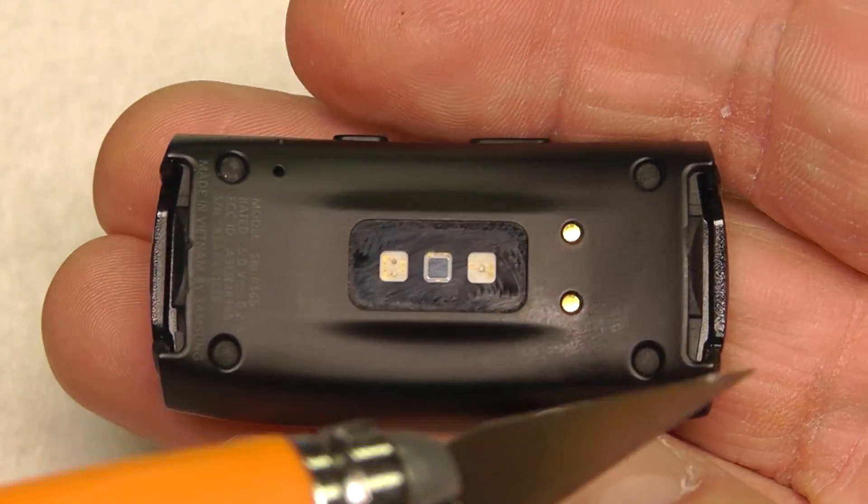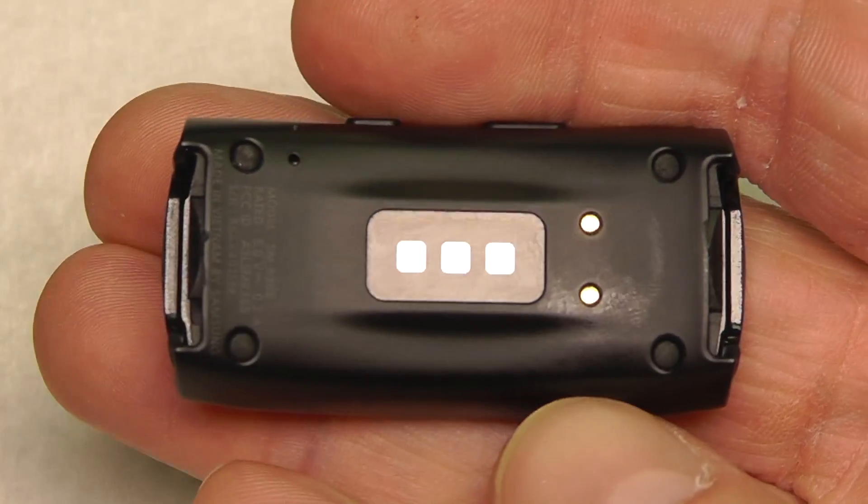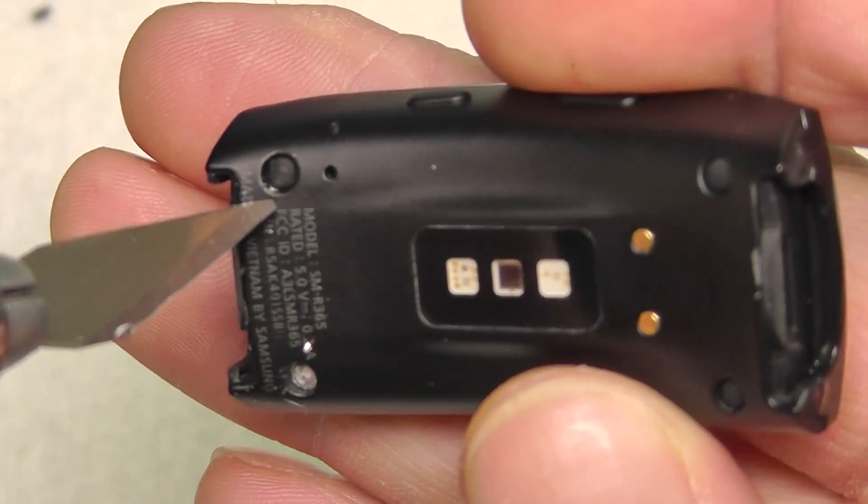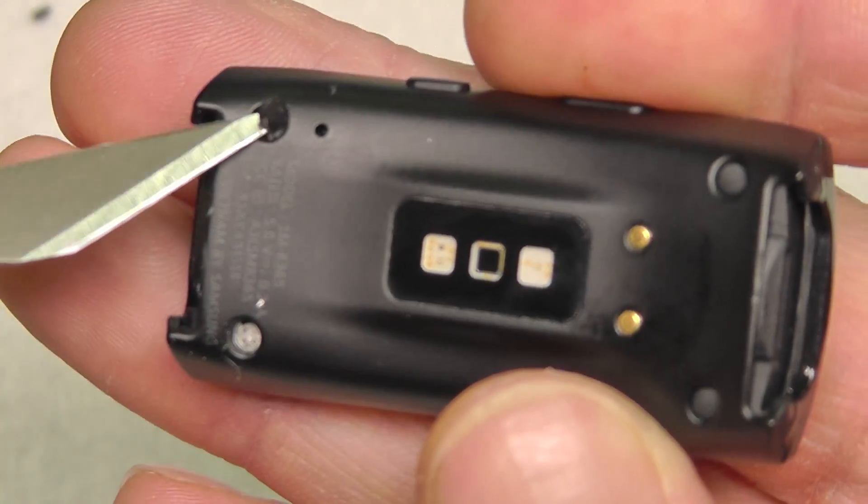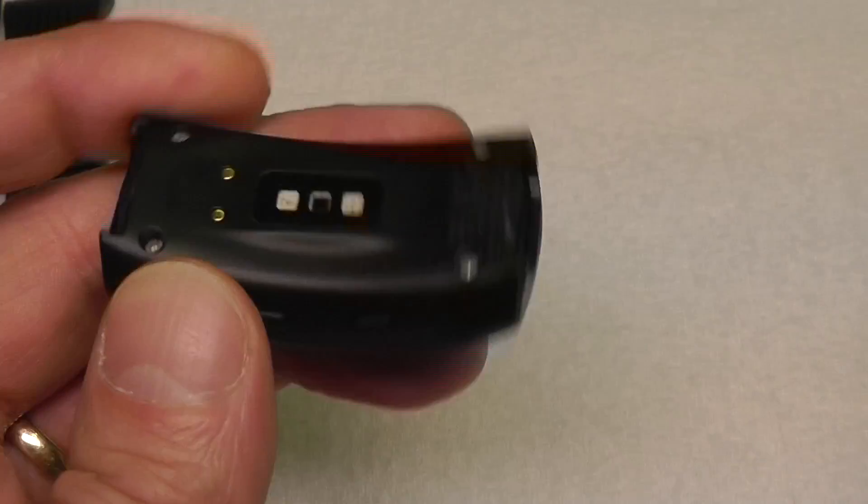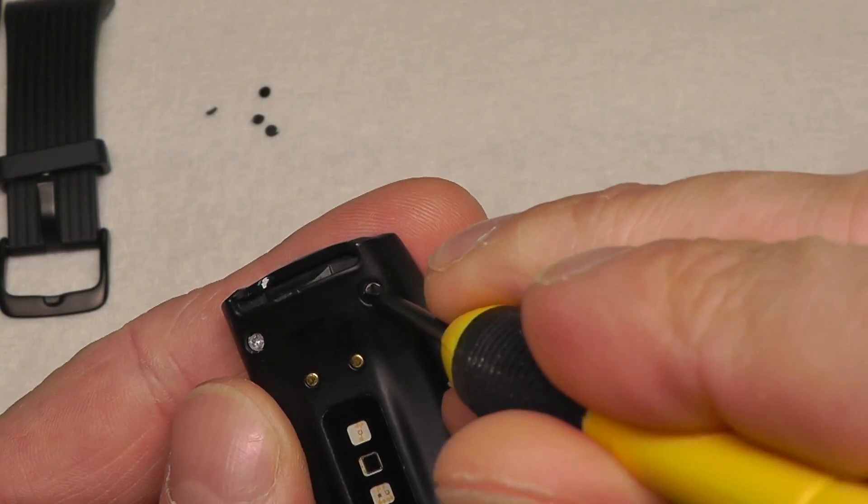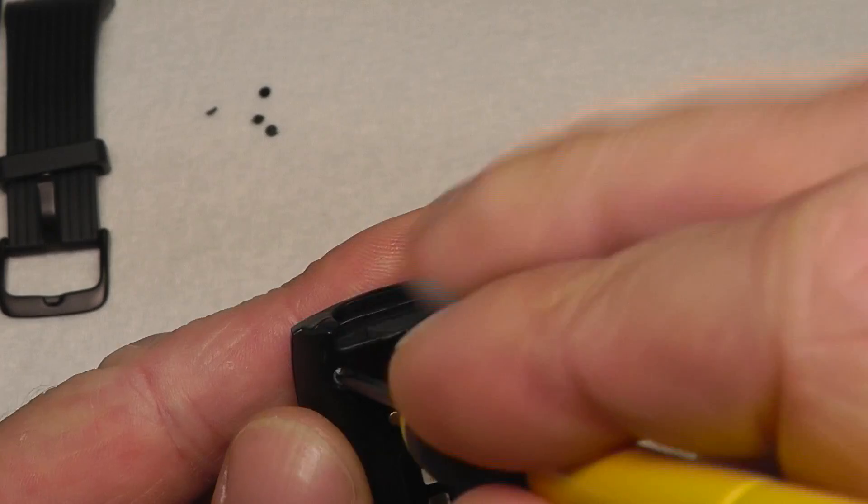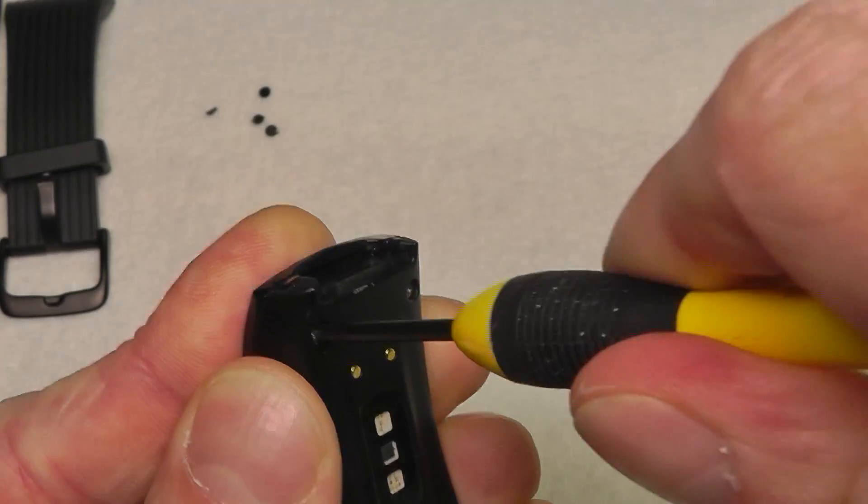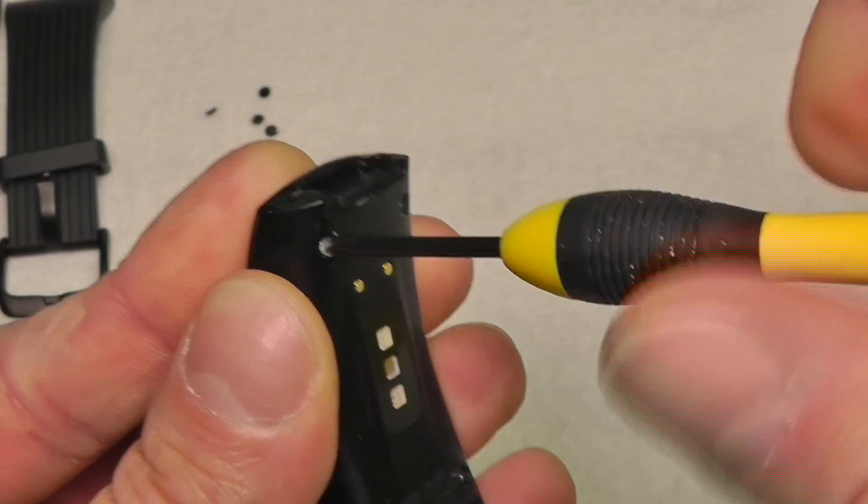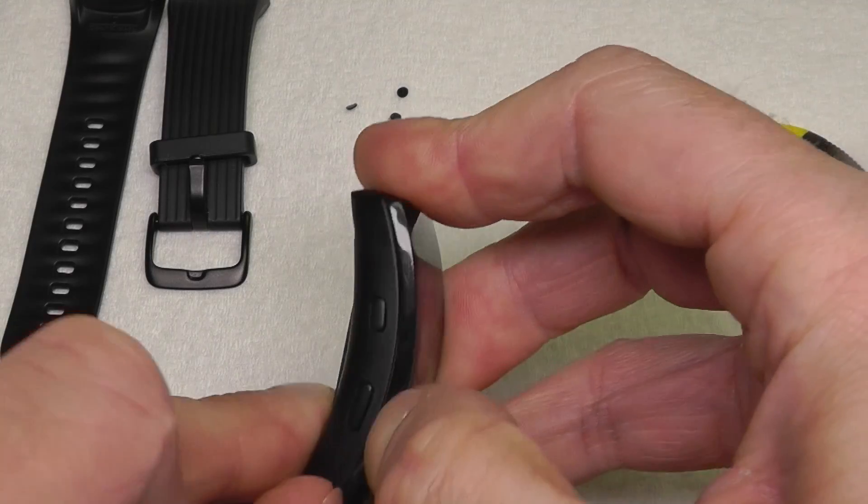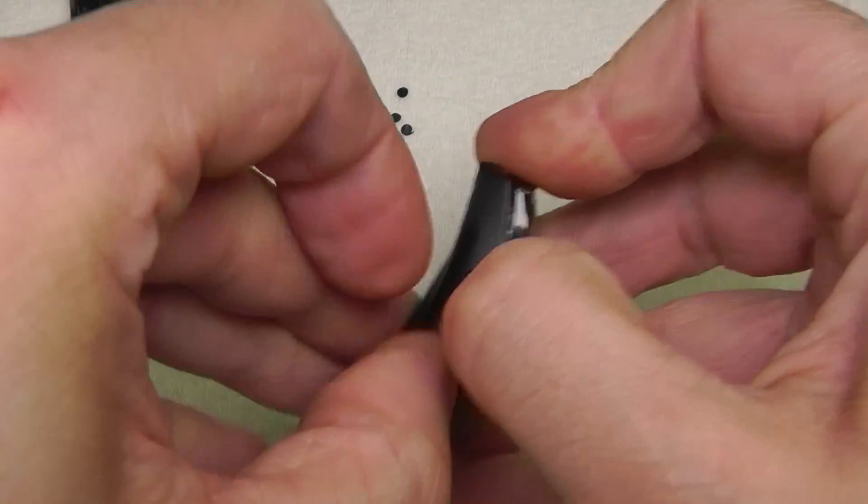First, on the bottom side, there are these rubber pieces covering up four small Phillips screws. I'm going to take those out.